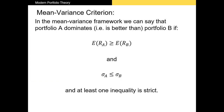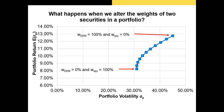Before we determine whether we can improve our Sharpe ratio, I need to mention the mean-variance criterion. The mean-variance criterion says that portfolio A dominates portfolio B if the expected return on portfolio A is higher than portfolio B and the volatility or standard deviation of portfolio A is less than portfolio B. When I say dominate, I mean we would always want to select and hold portfolio A's weights over portfolio B's weights.